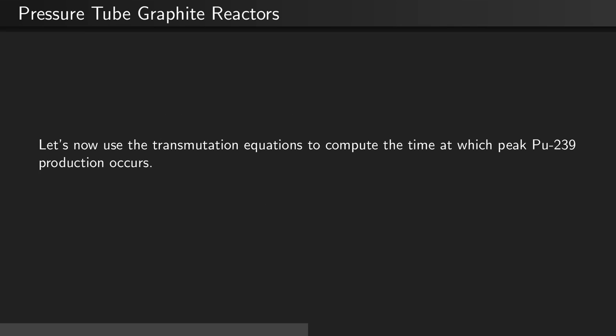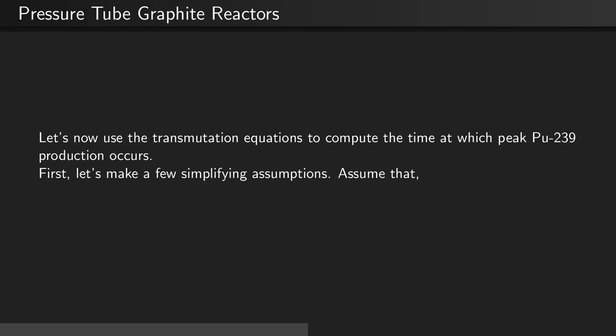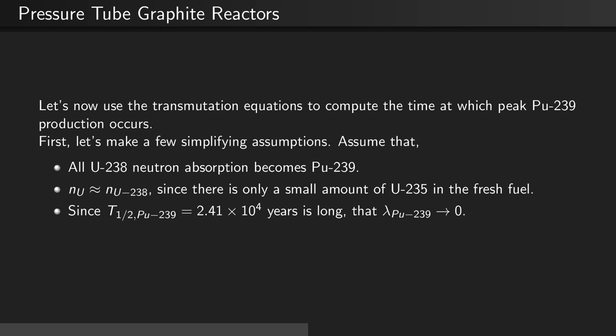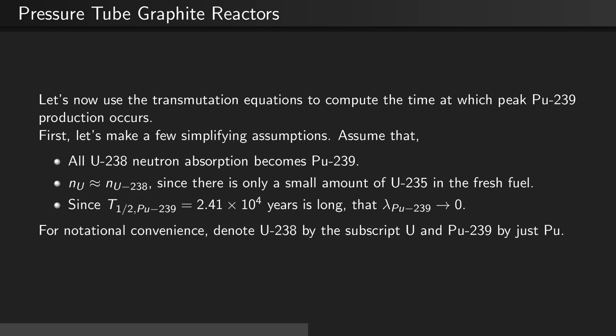Let's now use the transmutation equations to compute the time at which the peak plutonium-239 production occurs. First, let's make a few simplifying assumptions: assume that all uranium-238 neutron absorption becomes plutonium-239, and that the number density of uranium is approximately equal to the number density of uranium-238, since there is only a small amount of uranium-235 in the fresh fuel. Additionally, assume that since the half-life of plutonium-239 is very long, the decay constant of plutonium-239 with respect to reactor-length timescales is zero. For notational convenience, denote U-238 by the subscript u and plutonium-239 by the subscript pu.